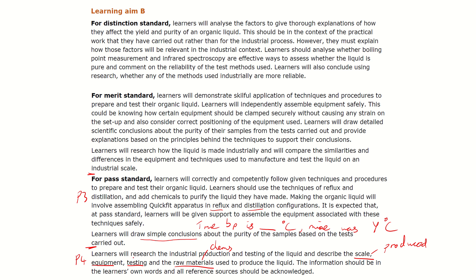The final thing for P4 is how industry tests purity — this will be an instrumental technique. Boiling point measurement is not used in industry; it's just quick and easy for students in college. You'll be finding instrumental methods such as mass spectrometry, GC (gas chromatography), or HPLC. Some companies use one or the other depending on how big the company is.